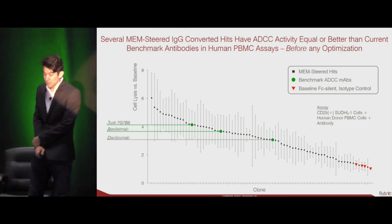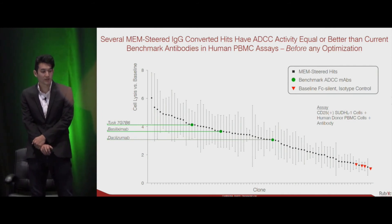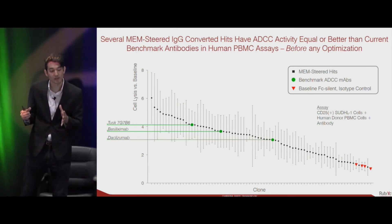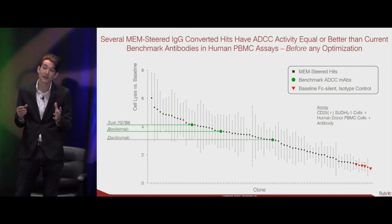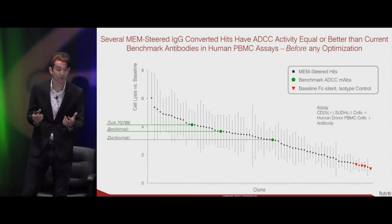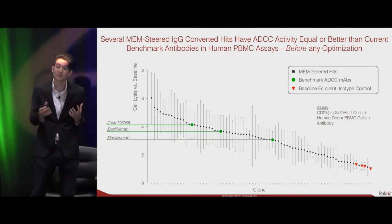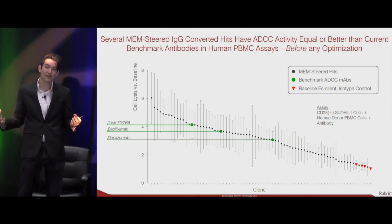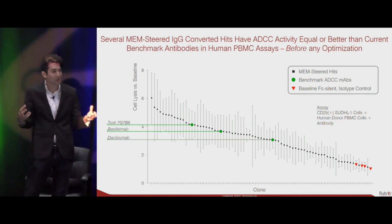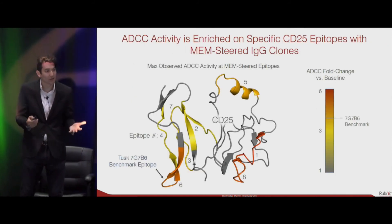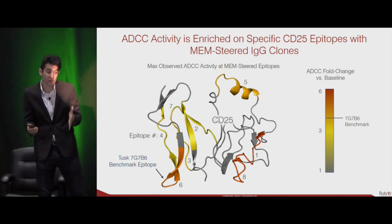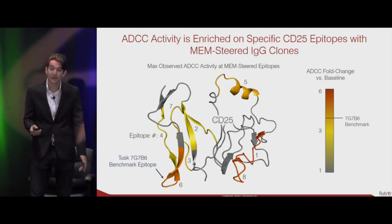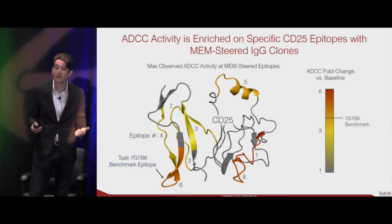The next important question: do these antibodies have ADCC activity? When we converted the most promising leads from scFv format to IgG format, we found that many of them had ADCC activity equal to or even better than the current benchmarks — the current state of the art. This is remarkable because we haven't even started optimizing these hits yet. What this tells us is that it's far more important to discover an antibody that hits the right epitope than to take an antibody at a suboptimal epitope and try to optimize from there. We can map this data back onto the actual structure of CD25, generating an ADCC functional map, and we've discovered two hotspots to pursue for further optimization.